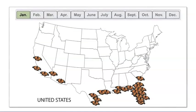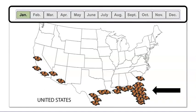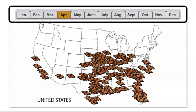This map shows where monarch butterflies are typically found in the United States during each month of the year. Do you notice the months at the top? I'm going to play a video of monarch butterfly movement through the year. Your job is to pay attention to both the butterflies on the map and the months at the same time. What do you notice about where the monarch butterflies are during each month of the year? Watch one time as I let it play all the way through.